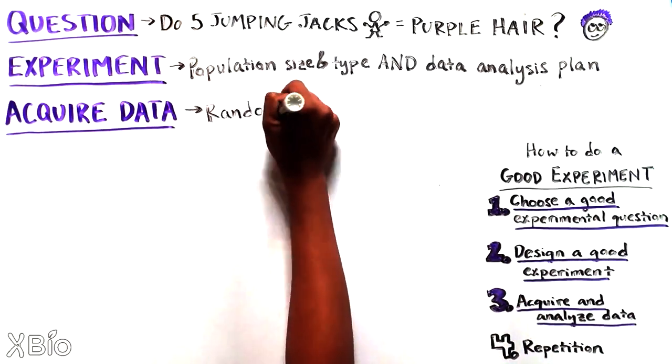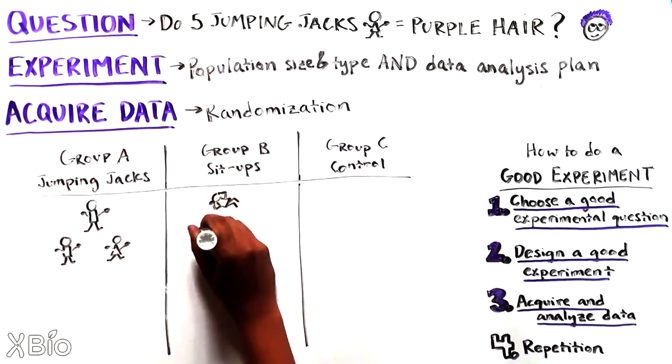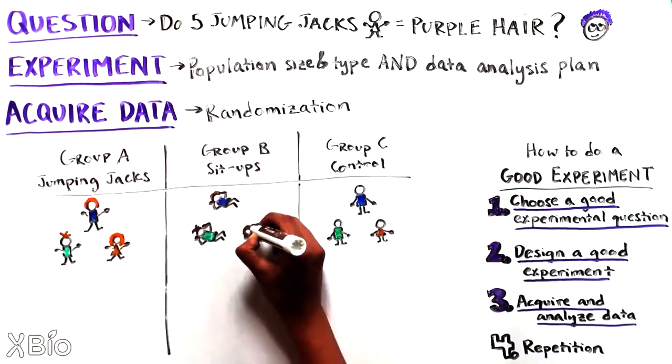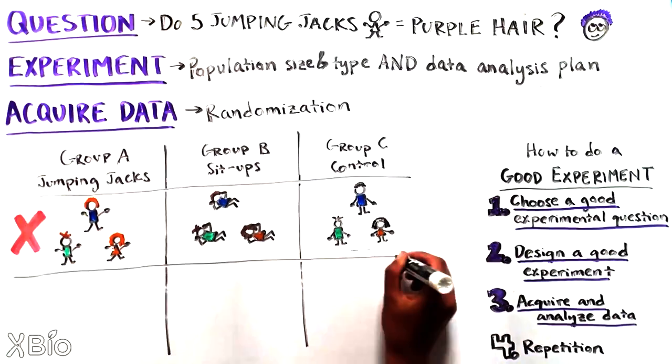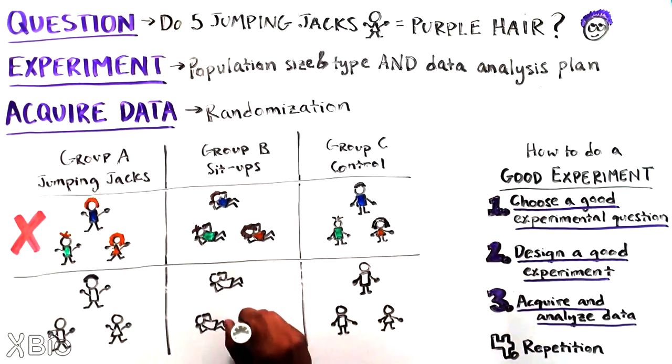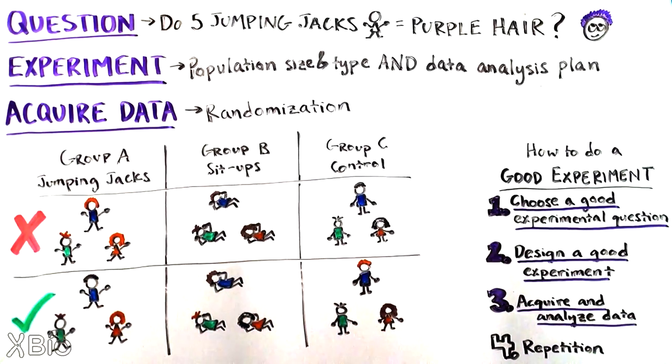The first is randomization. If we put all the blonde people in one group and all the brunettes in the other, any changes we see might be due to differences in hair color at the start of the experiment rather than the exercise. Randomization solves this issue, which means allocating whether someone should be in the test or control group in a random way.